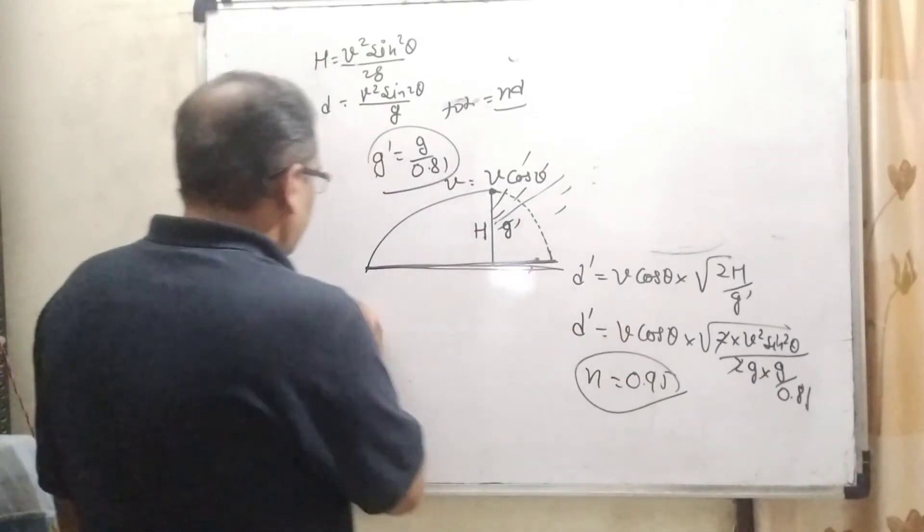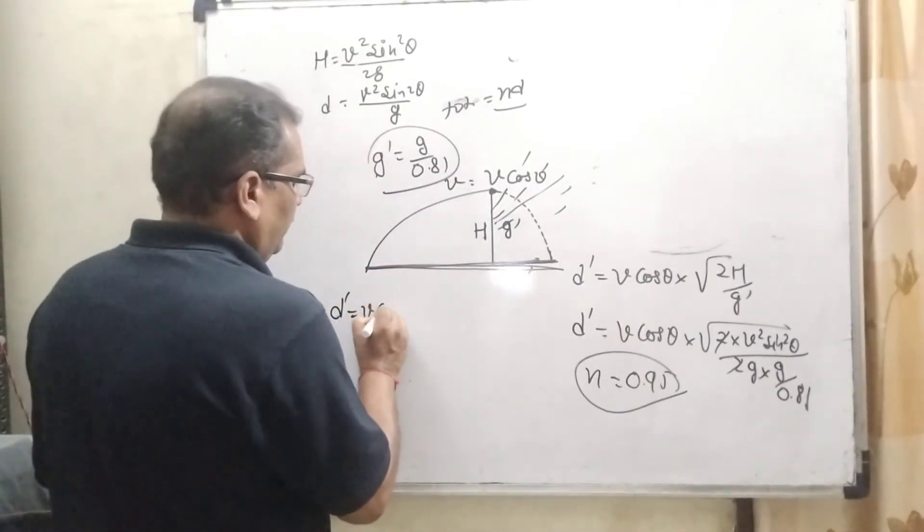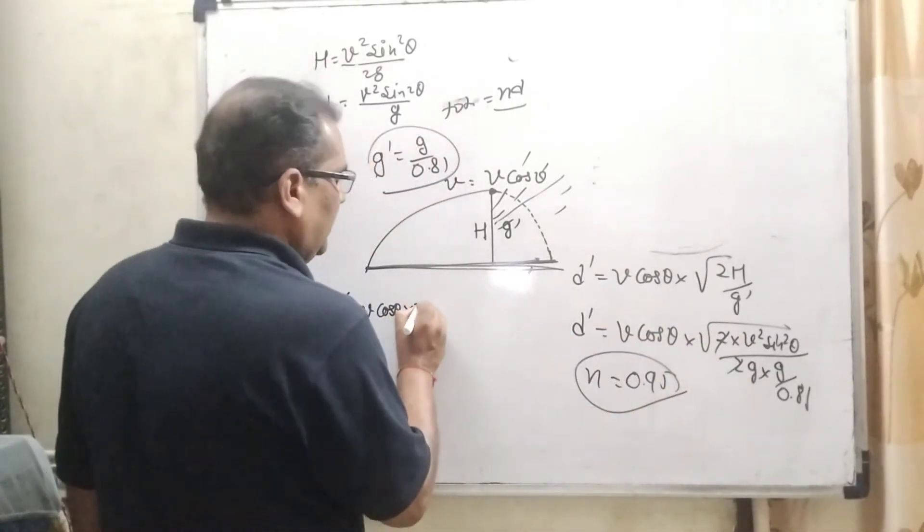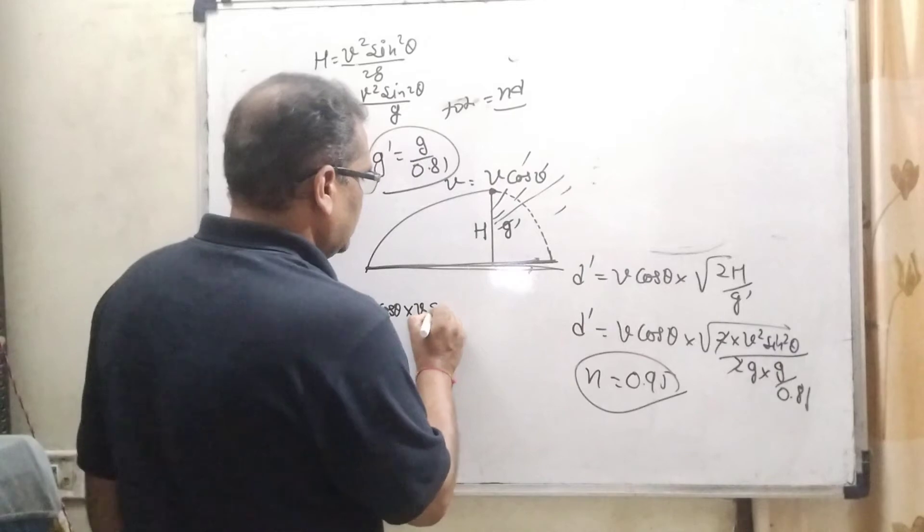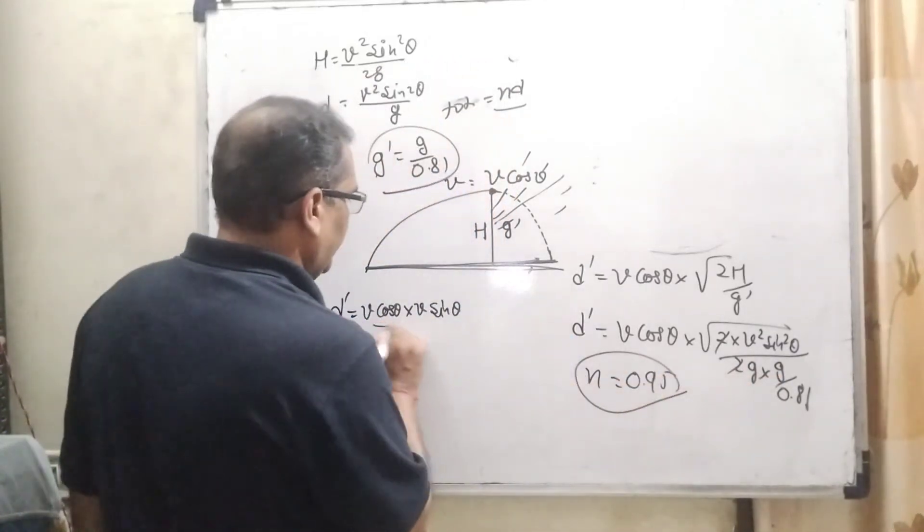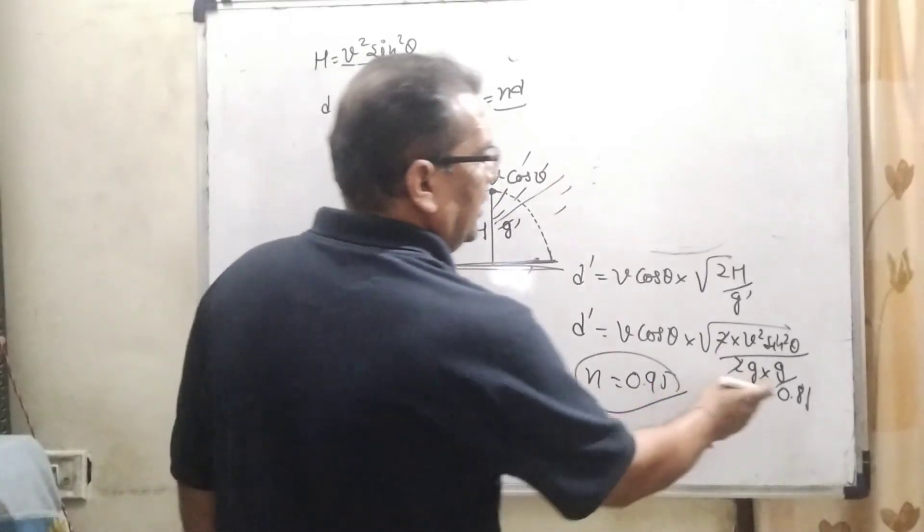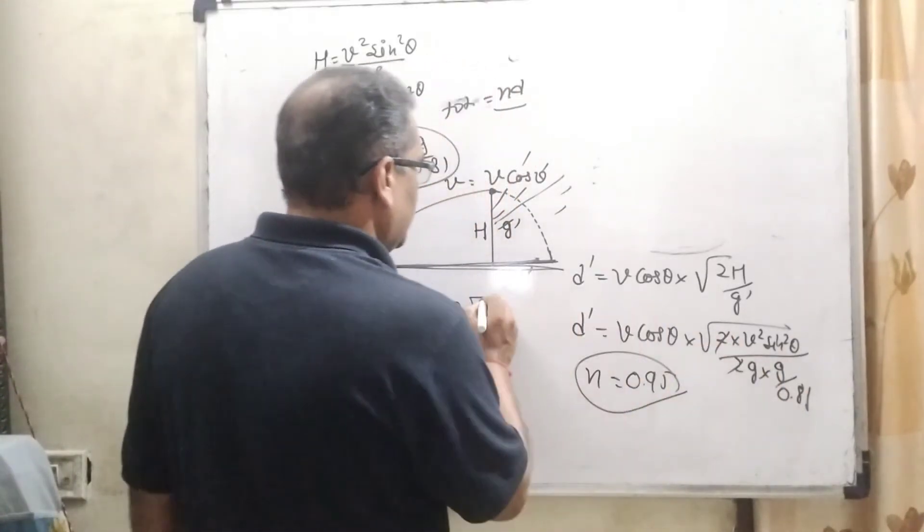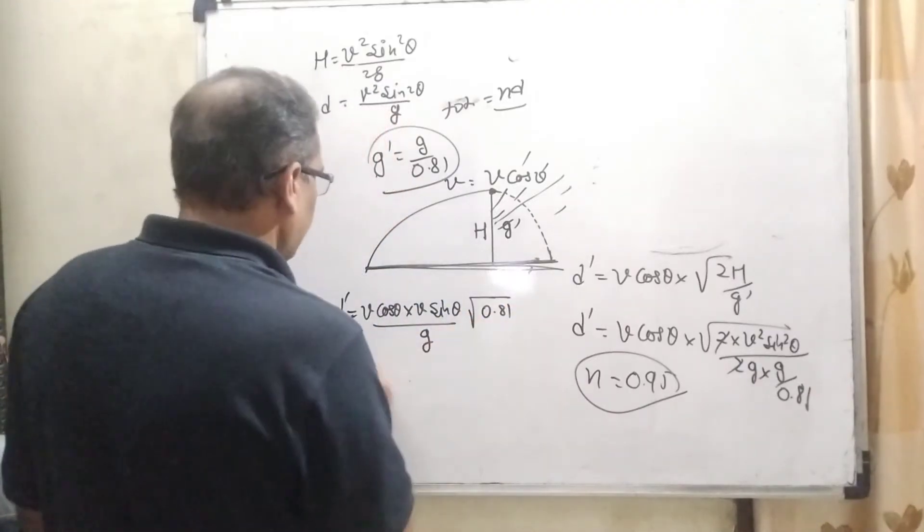Now solving this part, D dash equals V cos theta, here V squared now becomes V, sine squared theta becomes sine theta, here g squared now becomes g, and here 0.81 upon, the upon reaches in numerator, 0.81.